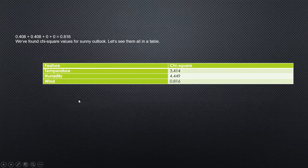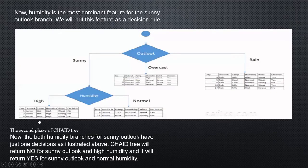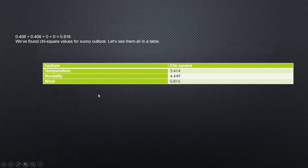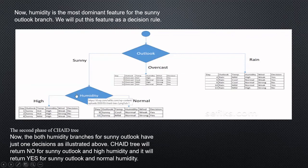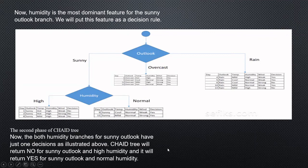Since humidity is the highest chi-square value for the sunny branch, it becomes the splitting node. On the left side, high humidity leads to a No decision, and on the right side, normal humidity leads to a Yes decision. Both humidity branches for the sunny outlook now have just one decision each, so CHAID writes No for sunny outlook with high humidity and Yes for sunny outlook with normal humidity.